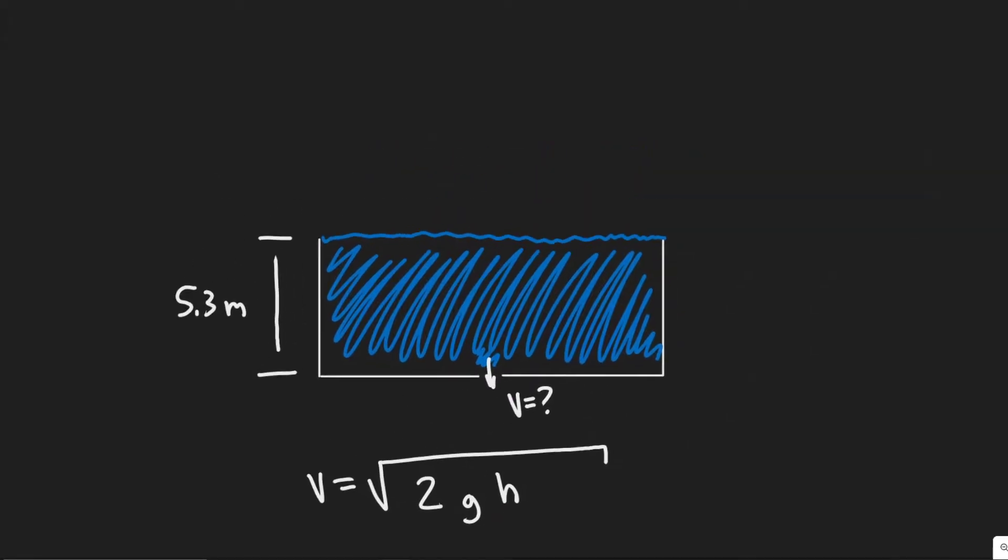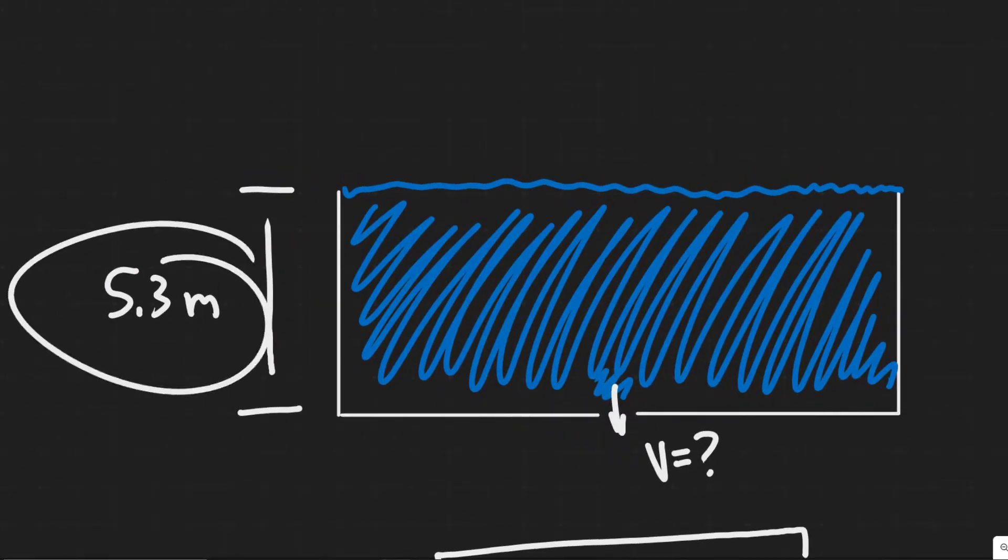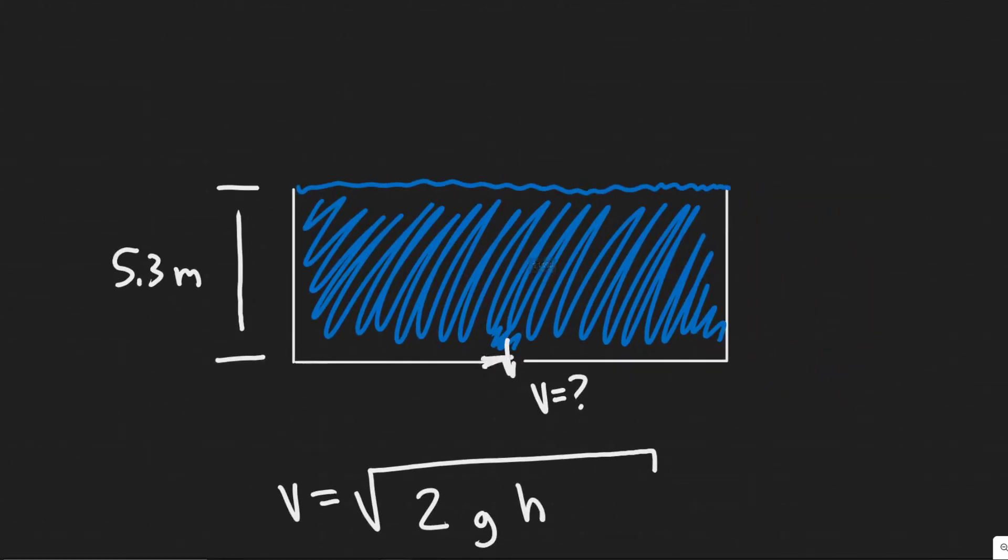So we have this tank here, right? Imagine this is our storage tank and we know it's going to have a depth of 5.3 meters. So the distance from where the water is right here, the surface level, to our hole is going to be 5.3 meters since this is at the bottom.